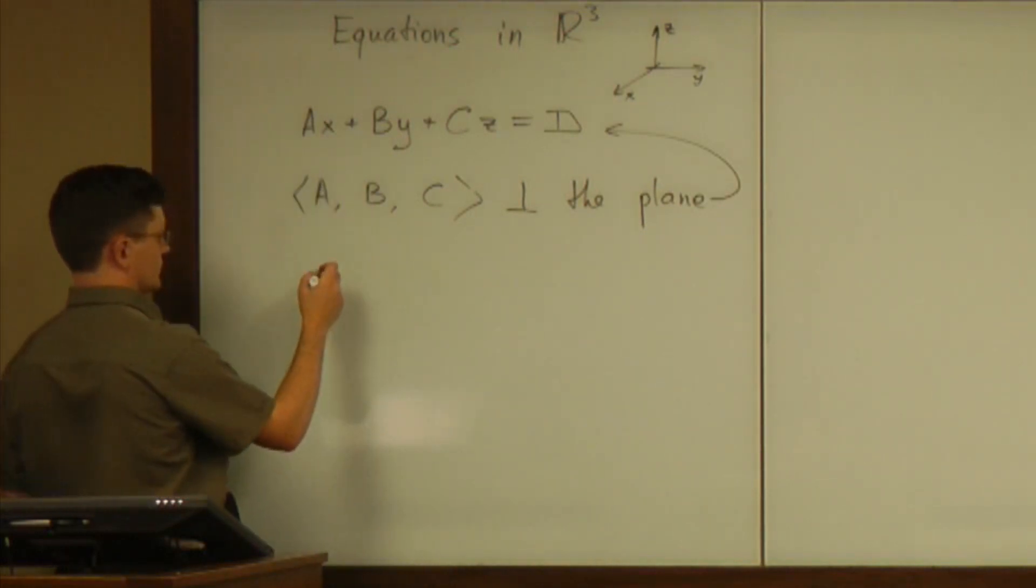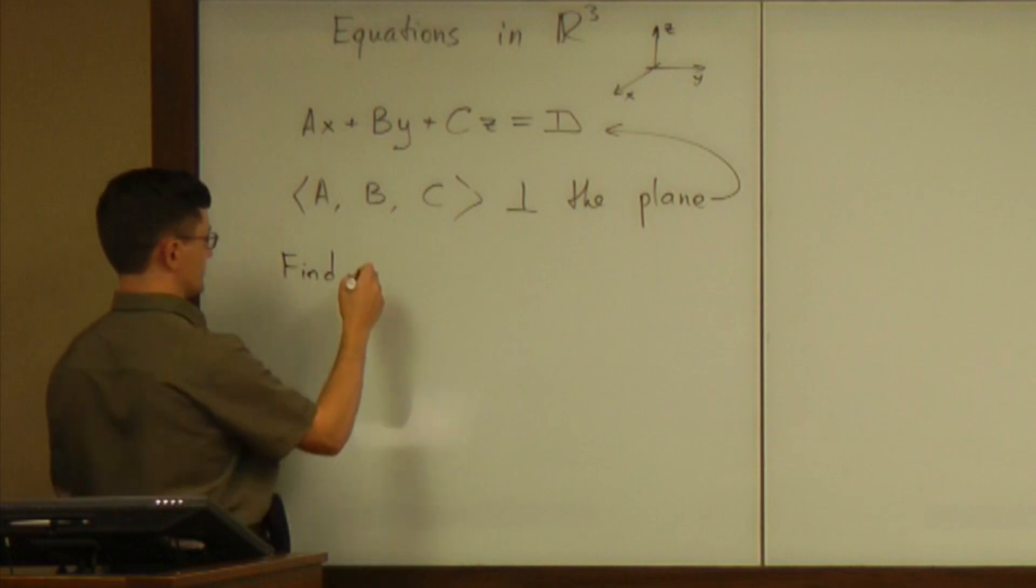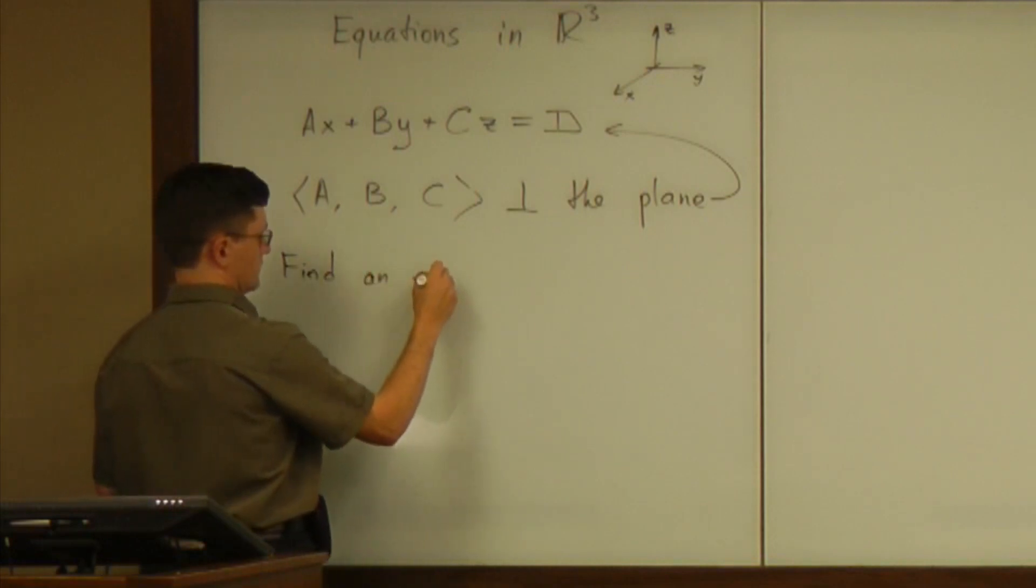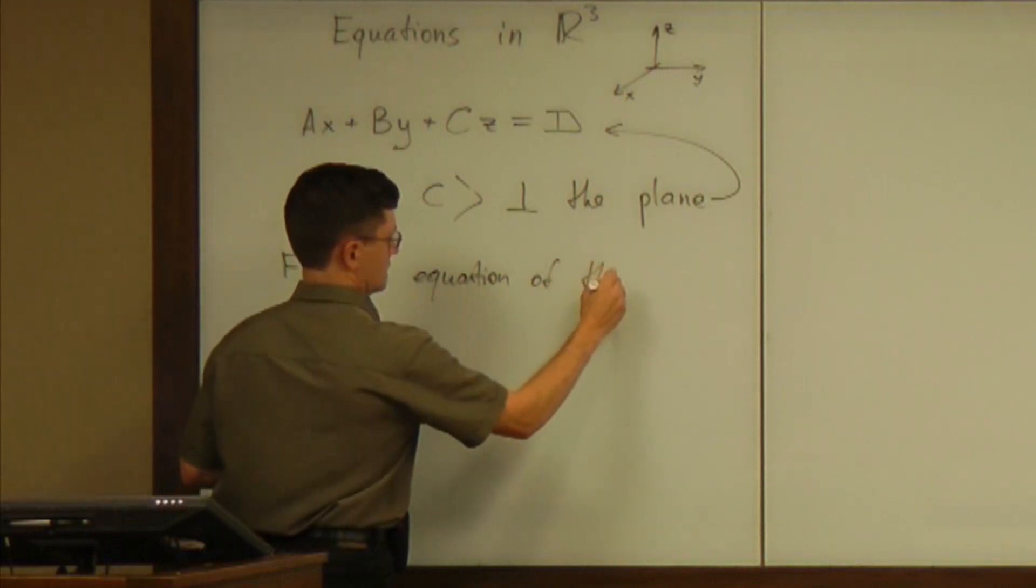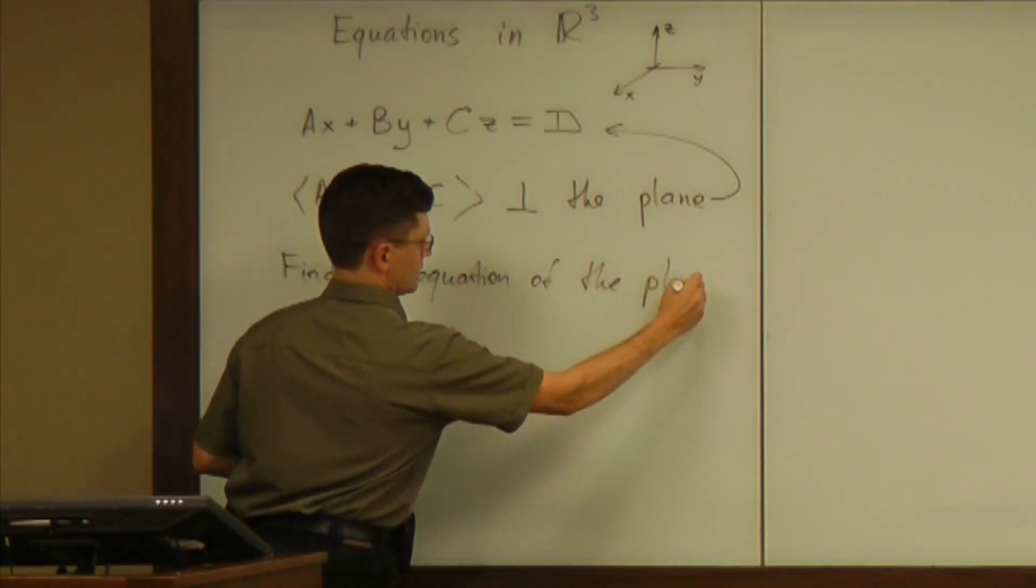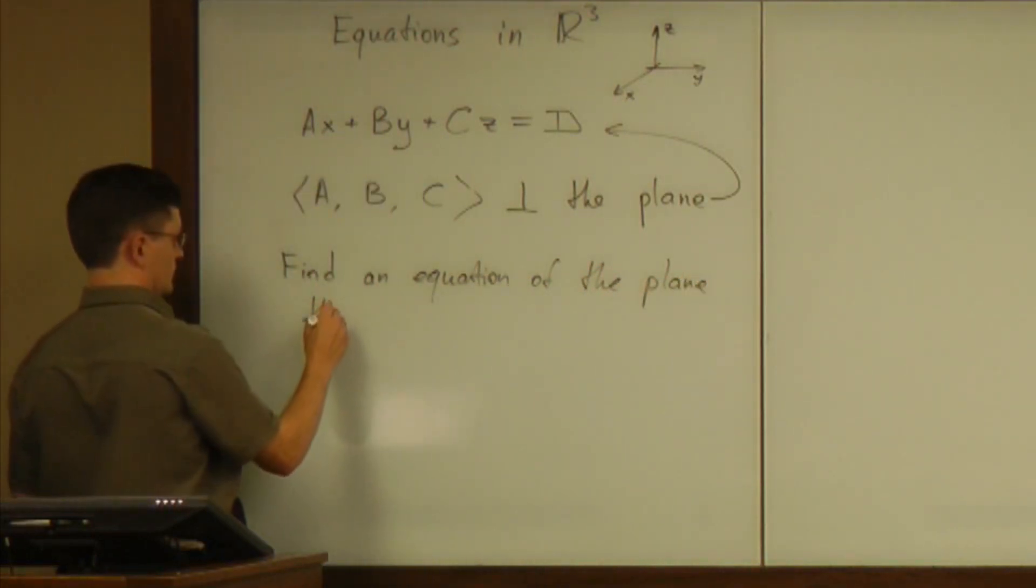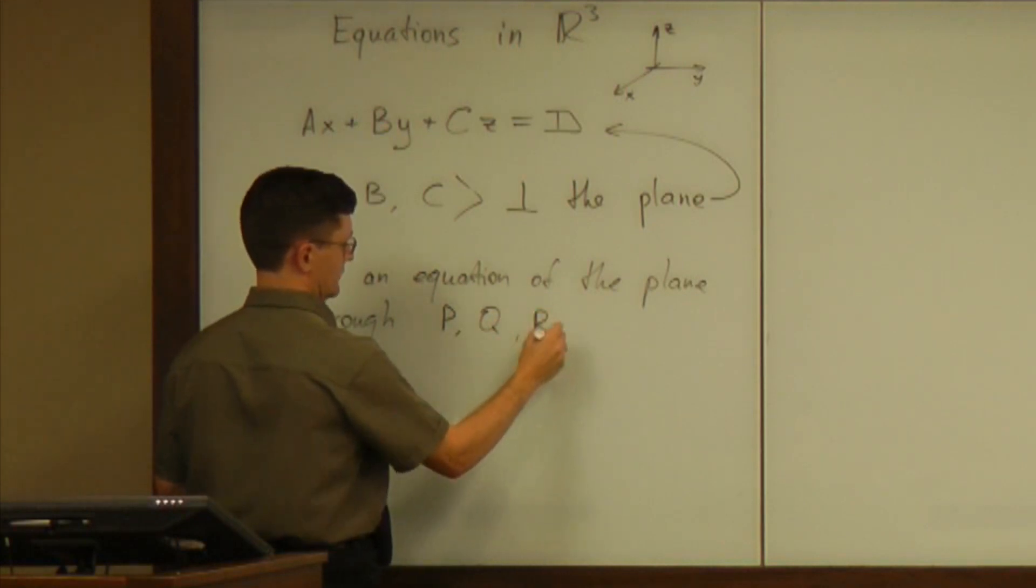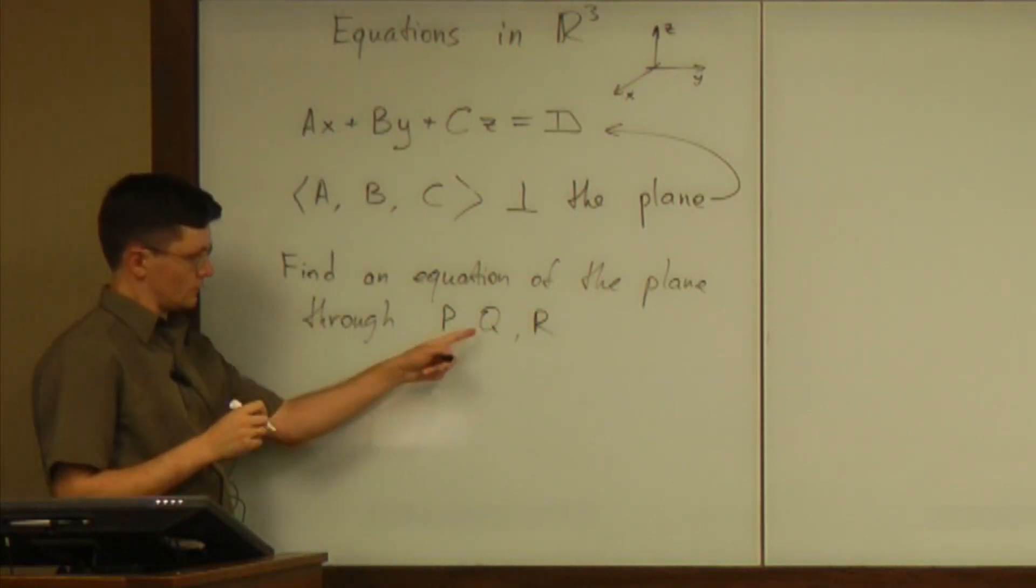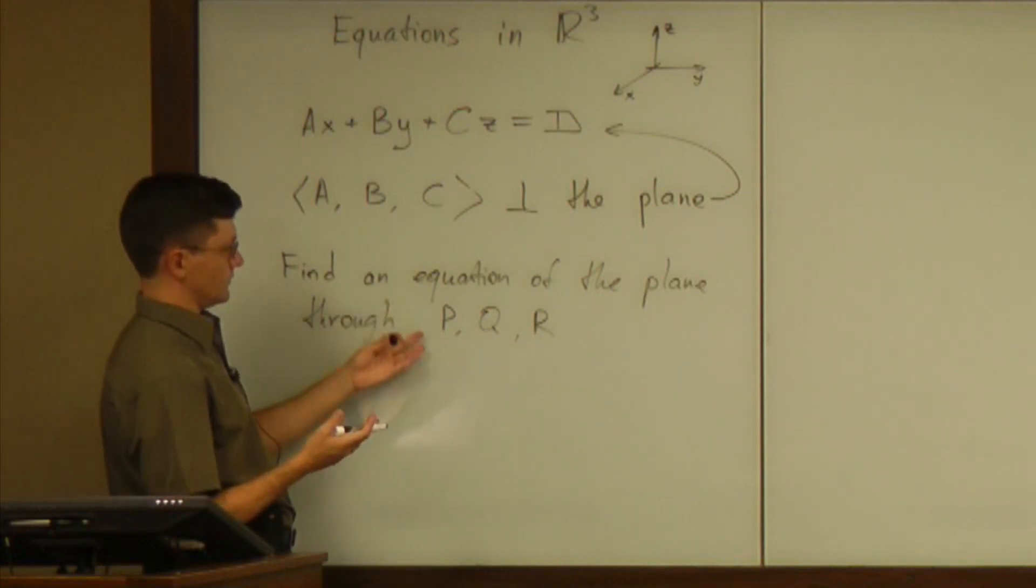If I give you three points and ask you to find an equation of a plane through three points P, Q, and R, and I'll give you coordinates of all three points, what would be a way to find an equation?